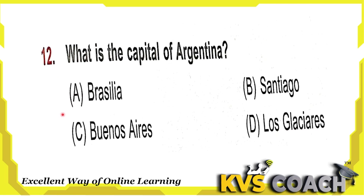Next question: what is the capital of Argentina? Option A is Brasilia — Brasilia is the capital of Brazil. Option B is Santiago — this is the capital of Chile. Option C is Buenos Aires — this is the capital of Argentina. Option D is Los Glaciares — this is a National Park of Argentina. So the right answer is option C, Buenos Aires.